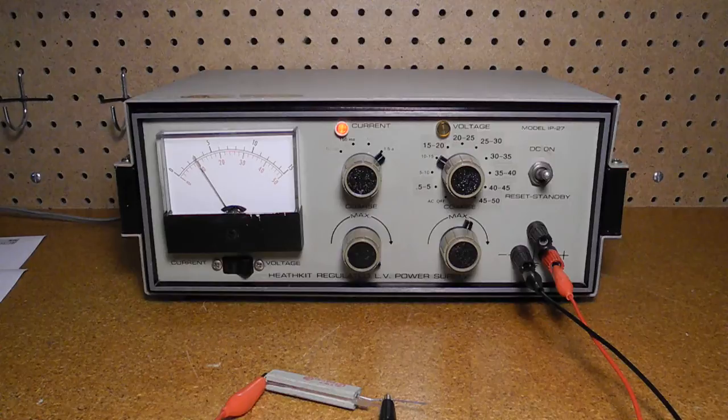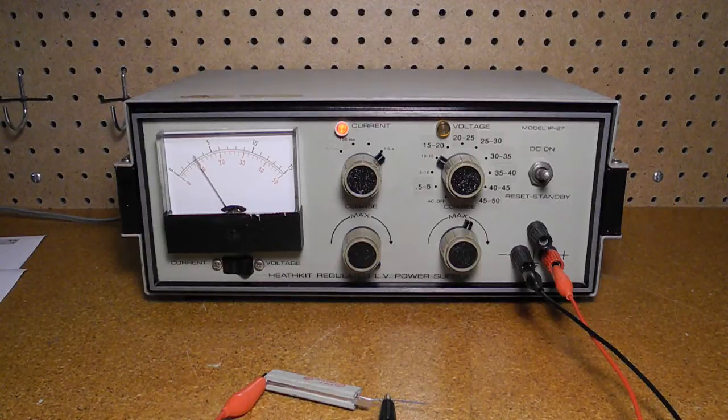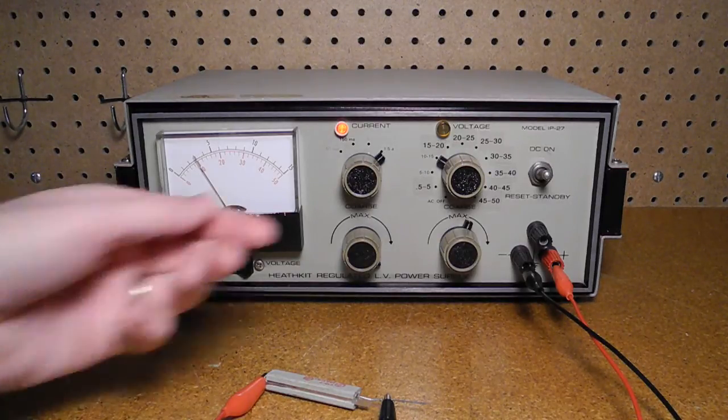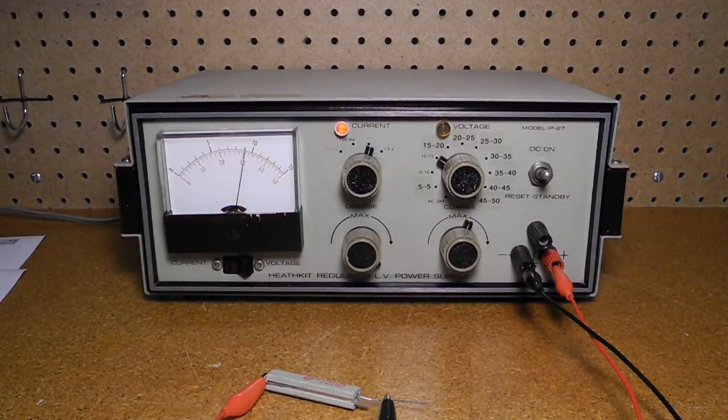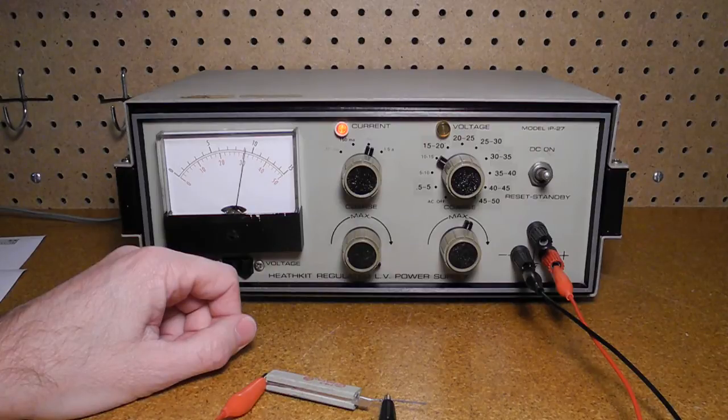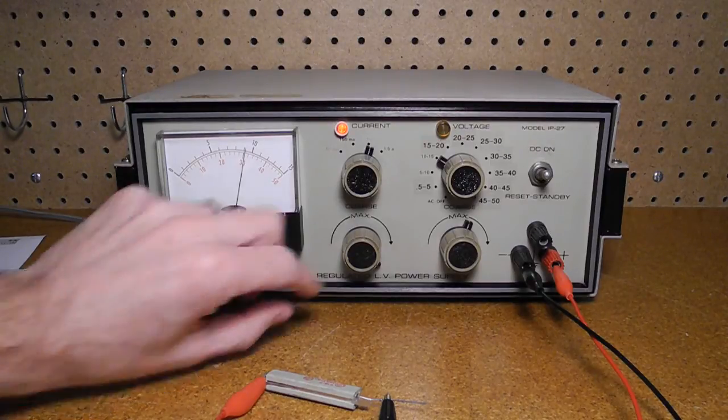If we wanted to limit the current to this value, we can set the coarse current control down to the 500 milliamp range. If we reduce the fine current adjust, we reach the point where the output current is limited to 300 milliamps.